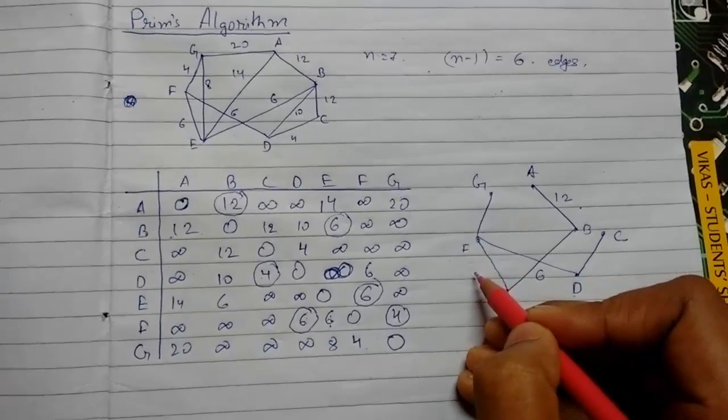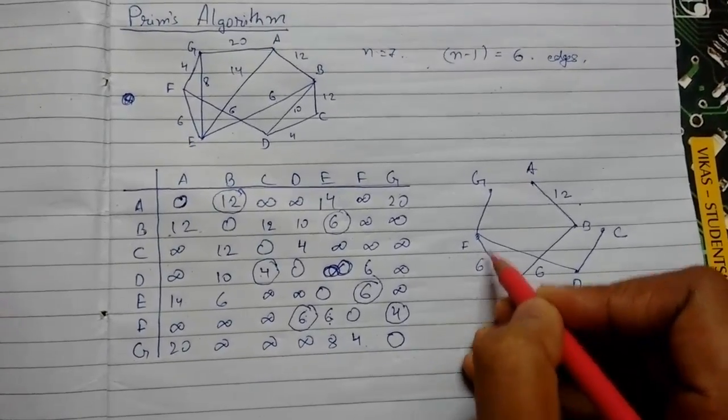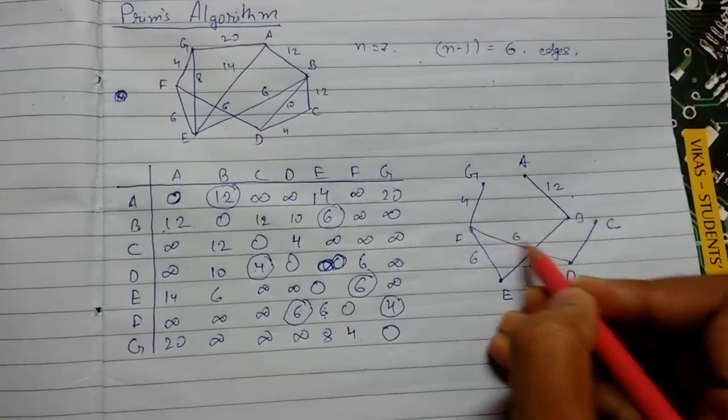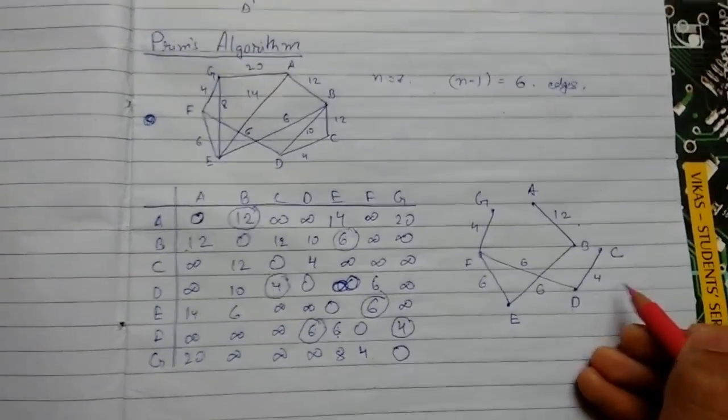E to F was 6, F to G was 4, now this is 6, now this is 4.